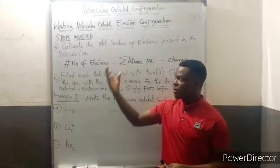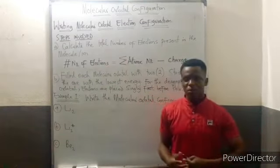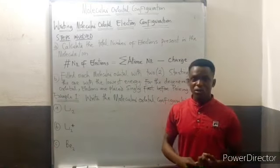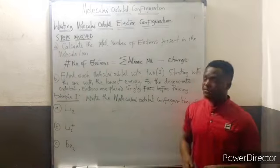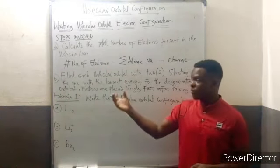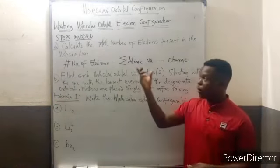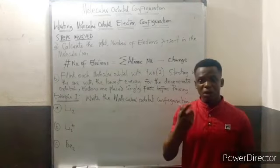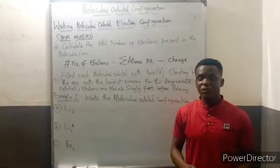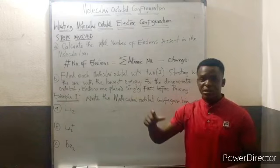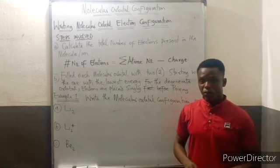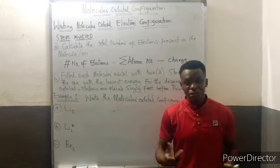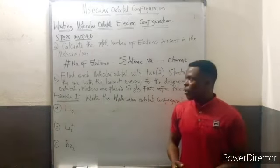I've drafted out two important steps you need to grab so you don't get lost. Molecular orbital configuration is very important because it will help you calculate bond order. If you don't know how electrons are being occupied, you will not be able to calculate bond order, and you may not be able to determine paramagnetism or diamagnetism.